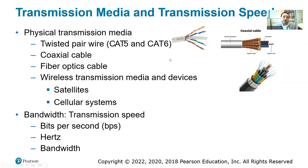Then we have fiber optic cable. It consists of fiberglass that transfers electric pulses generated through laser. It is super fast and its capacity is super large — it can handle up to five-plus terabytes per second. Fiber optic cable is used for the backbone: the cables connected between continents through the oceans, as well as the last mile. We also have wireless transmission media and devices such as satellites and cellular systems, through cellular towers.